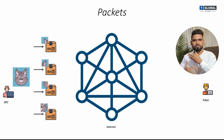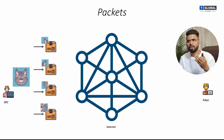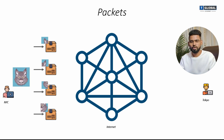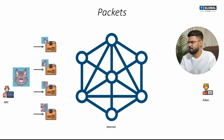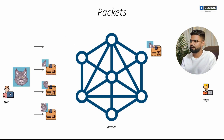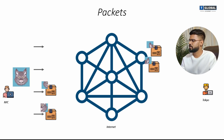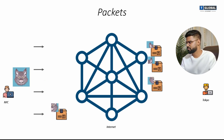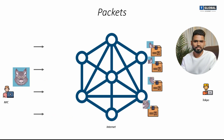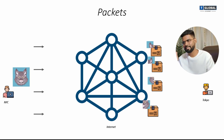Maybe a packet can go through Asia, maybe directly through Tokyo, or any other path. For example, the first packet can choose the topmost path, the second can choose another, the third another, and the fourth as well.